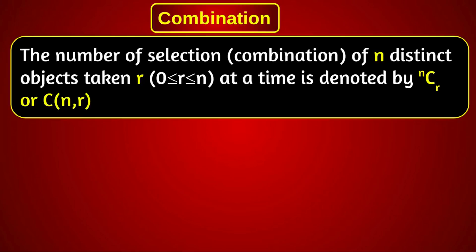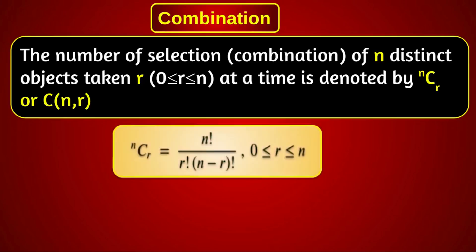The number of combinations of n things taken r at a time. We calculate using the formula: NCR equals n factorial divided by r factorial into (n minus r) factorial, where r lies between 0 and n inclusive.